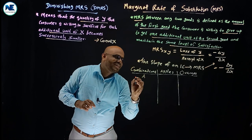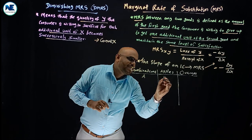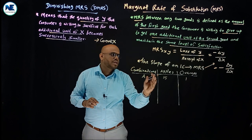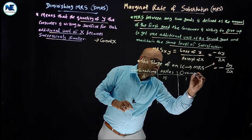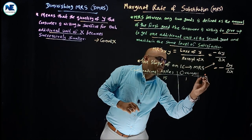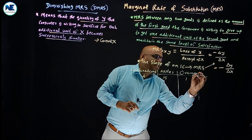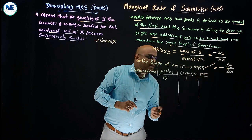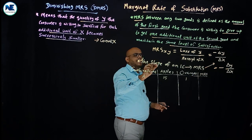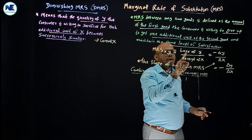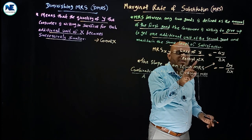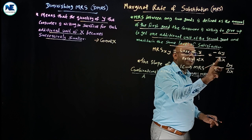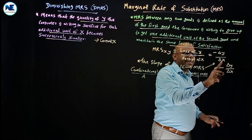In combination A, you can see 15 apples and 1 orange. The formula for marginal rate of substitution is the loss of Y divided by the gain of X — that is, delta Y divided by delta X.